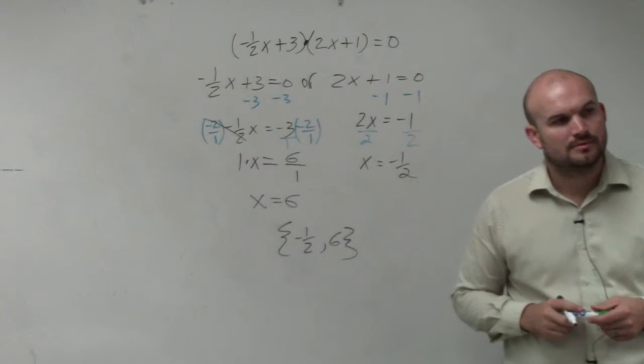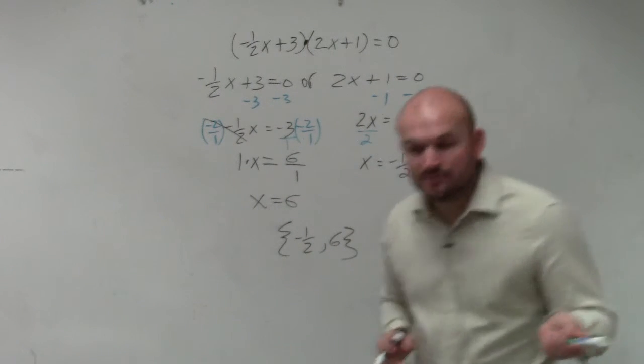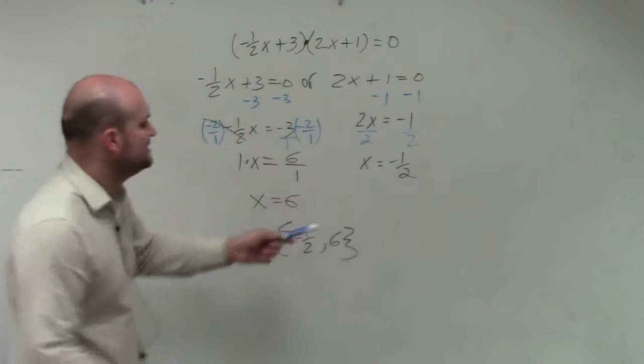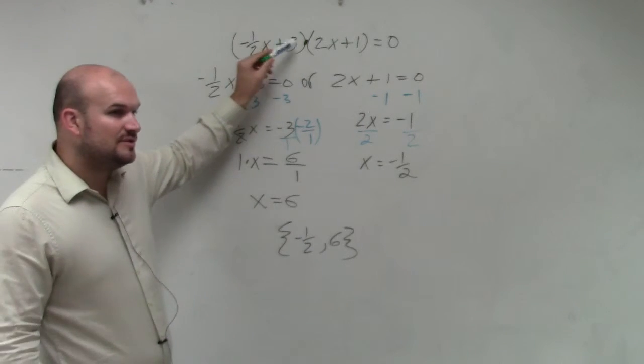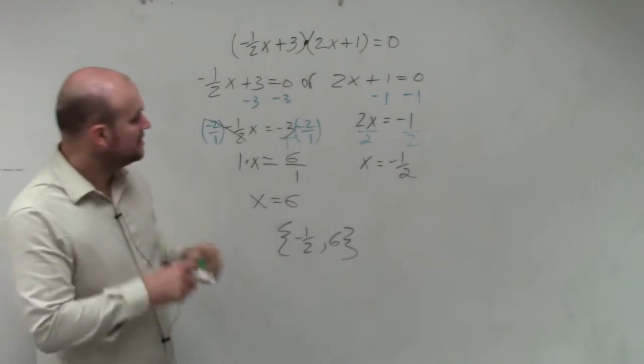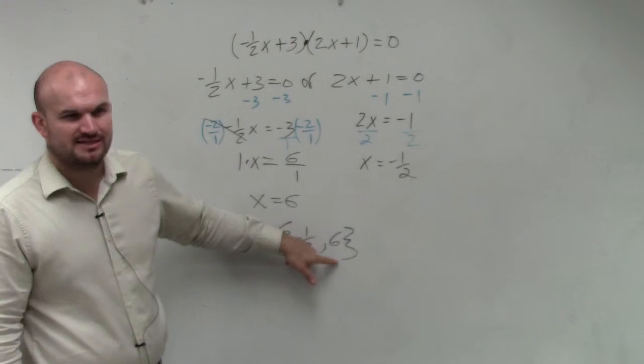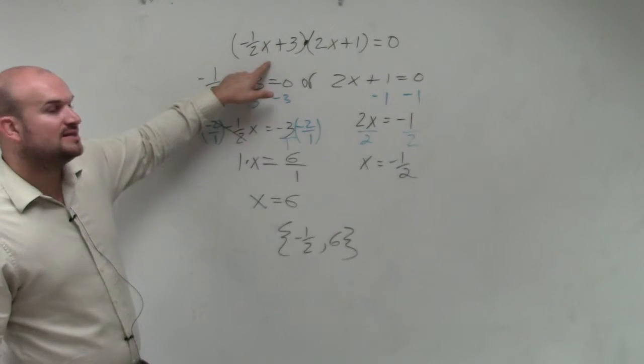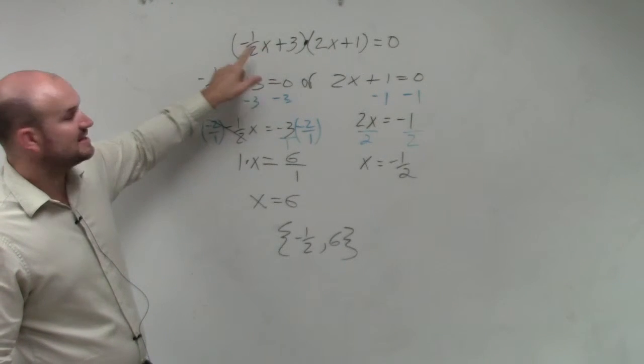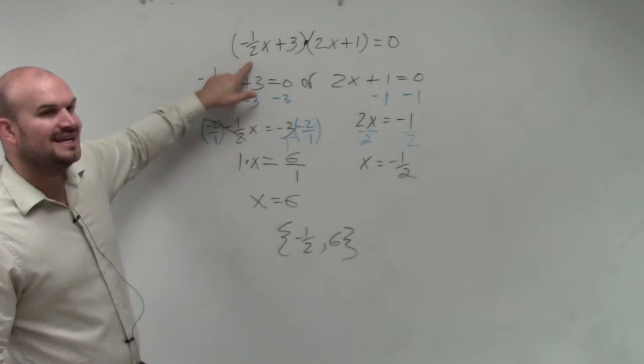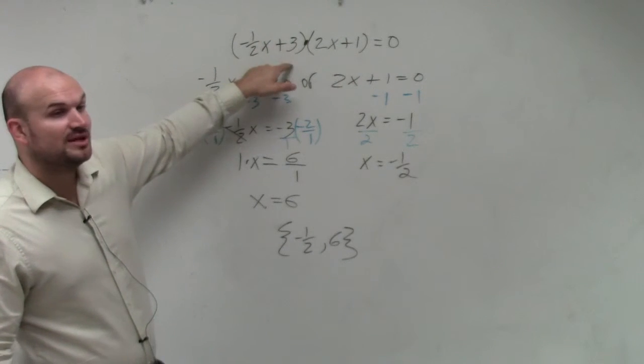But those don't equal 0. You're right, they do not equal 0. But what happens when we plug these values into this expression? What happens? So let's just plug in 6, because I think 6 would be easier. So if I plug in 6 in for x, 6 times negative 1 half is negative 3. Negative 3 plus 3 is?